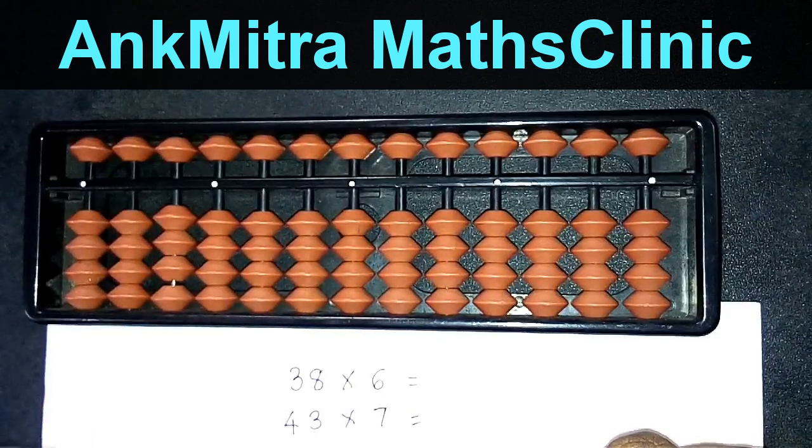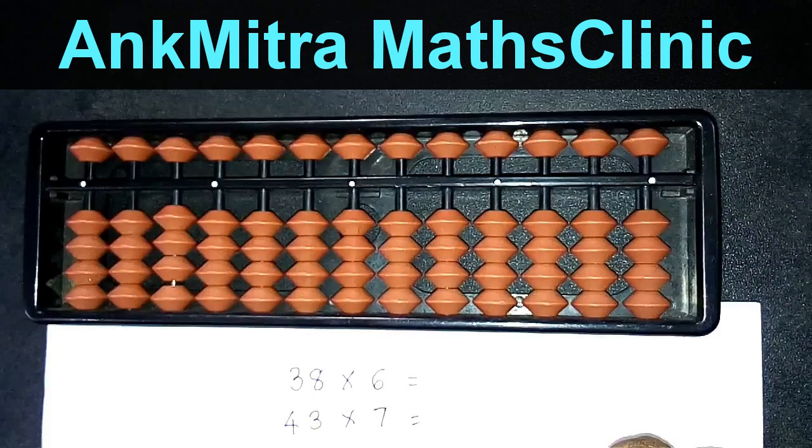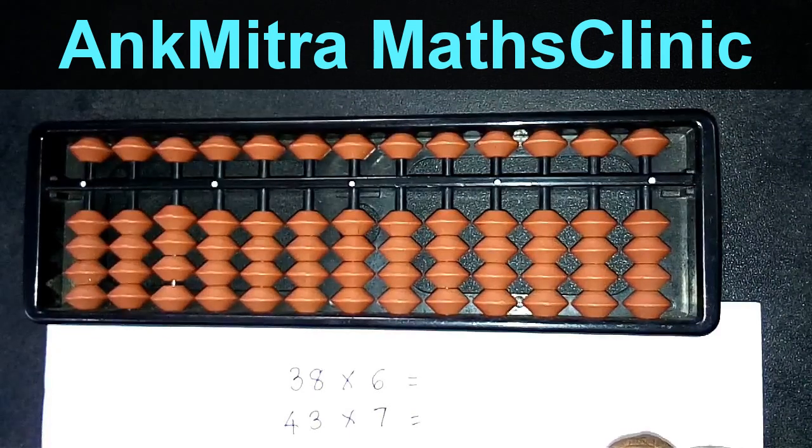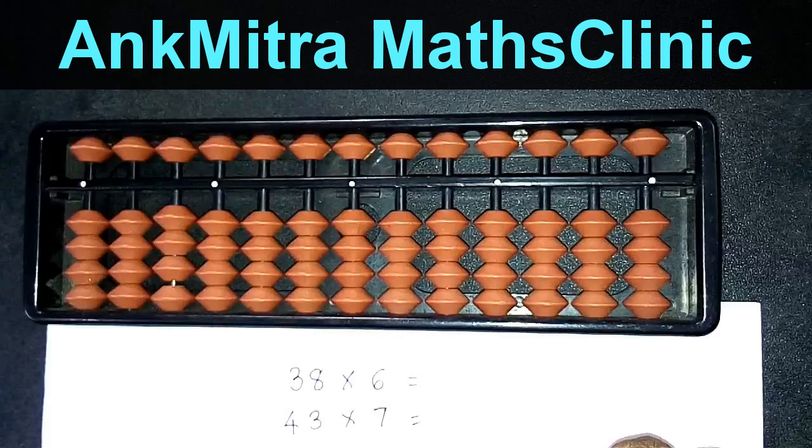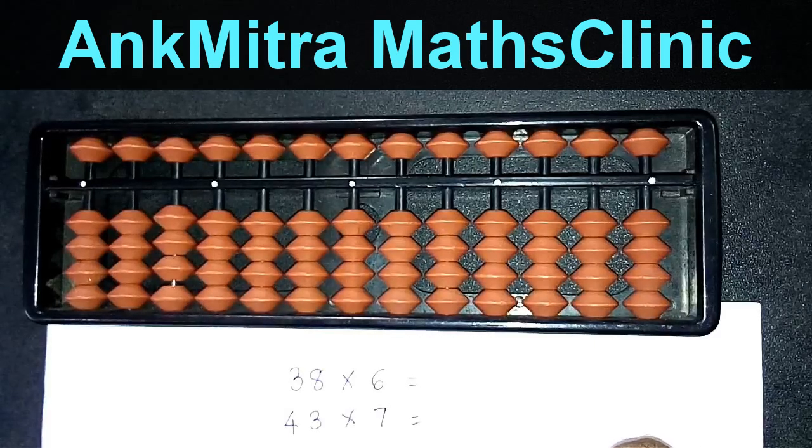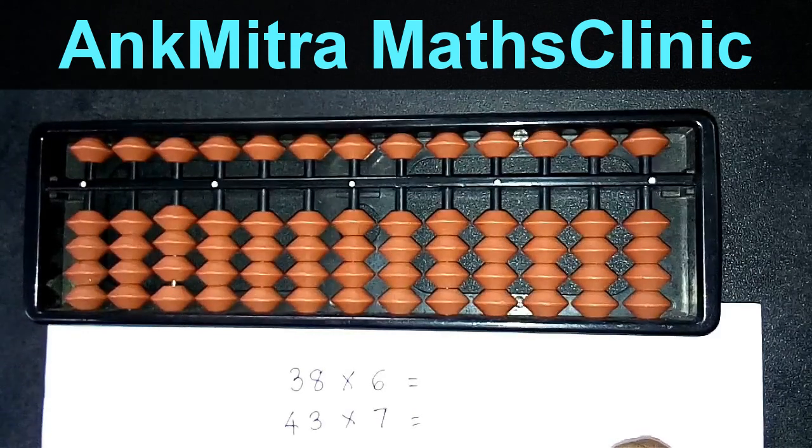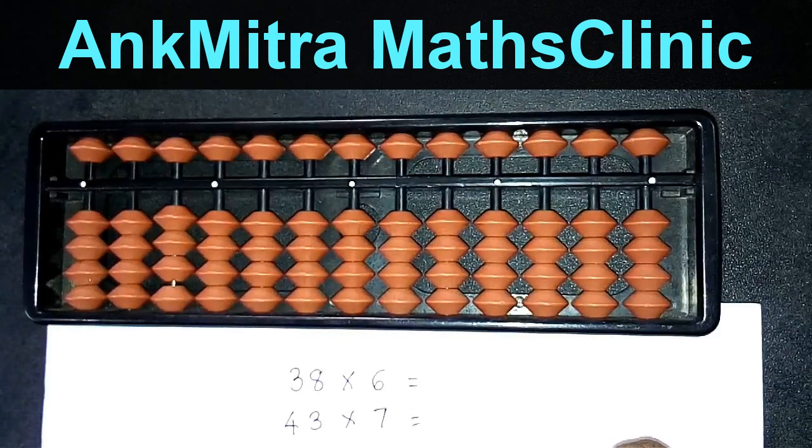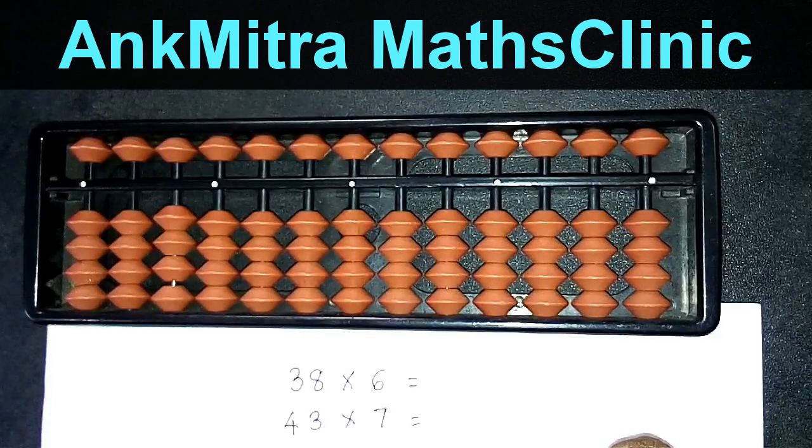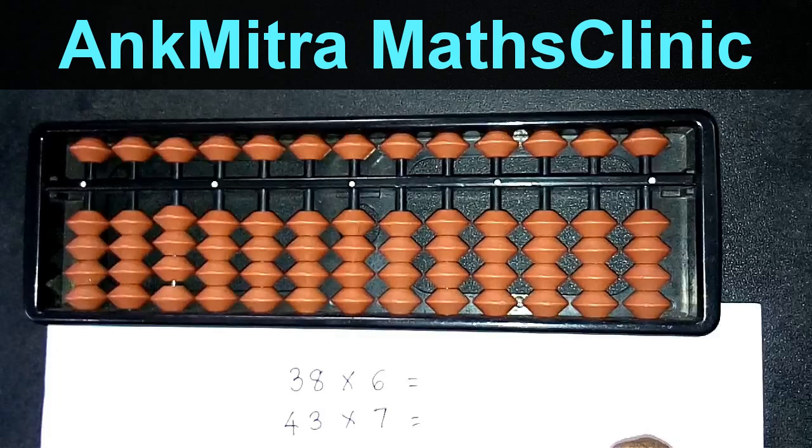The next part to be ensured is while reciting the tables of all digits up to 9, one needs to ensure that the answer each time is a two-digit number. So something like 7 fives are 35 is a two-digit number, but 2 threes are 6 is not a two-digit number. So in this case, we need to make it a two-digit number by prefixing it with a 0.